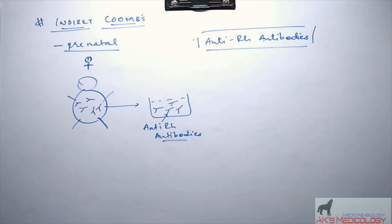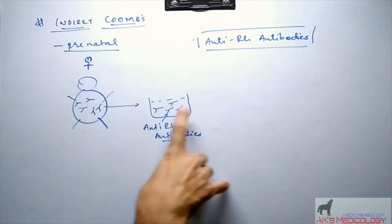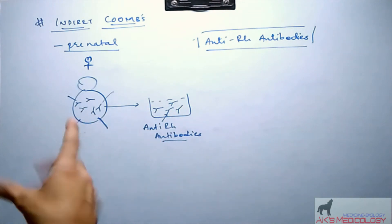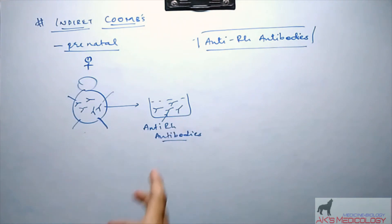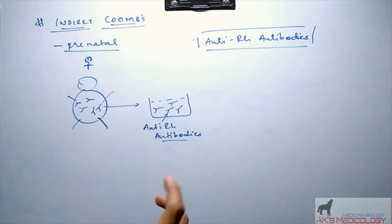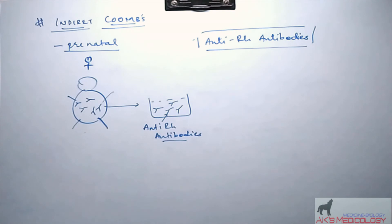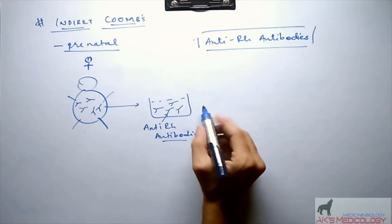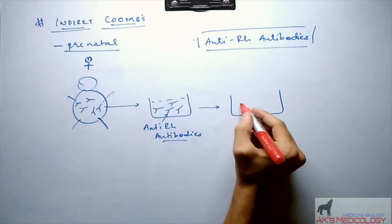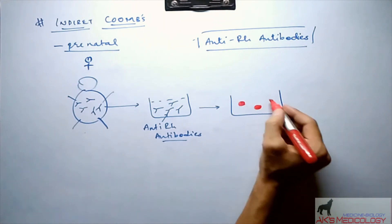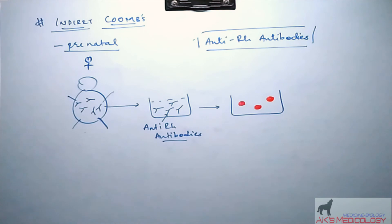The difference here is that these anti-Rh antibodies are not attached to the surface of the RBC, since the mother's RBCs do not contain Rh antigen, so these antibodies are non-reactive. Therefore, we need to add RBCs from an Rh positive individual — RBCs which possess Rh antigen over their surface. This is the next step in performing the indirect Coombs test.